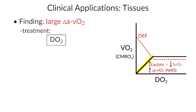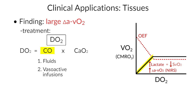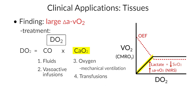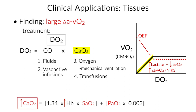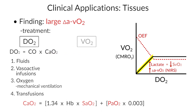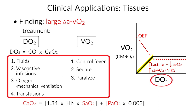To augment delivery of oxygen: DO2 is equal to cardiac output times CaO2, and from that equation we know that delivery of oxygen can be augmented by fluids, vasoactive infusions, oxygen — and not just by nasal cannula, but including mechanical ventilation. A very important one is that we can give transfusions. By transfusing, we're increasing your CaO2, and this is the single most significant factor that determines content of oxygen in the blood. Alternatively, we can regulate consumption of oxygen by controlling fever. We can sedate. We can paralyze. All of these in an effort to match delivery to consumption.